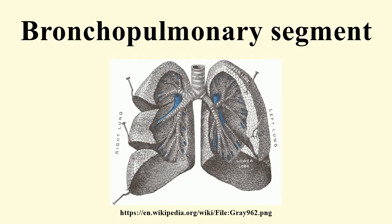Right lung — superior lobe: apical segment, posterior segment, anterior segment. Middle lobe: lateral segment, medial segment. Inferior lobe: superior segment, medial basal segment, anterior basal segment, lateral basal segment, posterior basal segment.